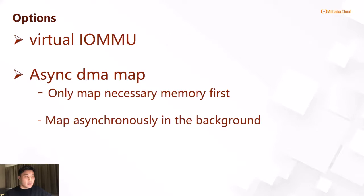Based on these conditions, what options can we have? The first thing that comes to mind is virtual IOMMU or para-virtualization IOMMU. It should be a good solution, but the implementation is very complex and requires much development effort. So we chose a simpler solution — we call it Async DMA Map. There are two key points: first, only map necessary memory to ensure the guest OS boots up; then map the other memory asynchronously in the background. It might bring a little delay perception to the user, but it gives a better user experience.